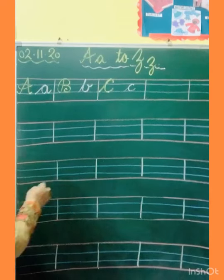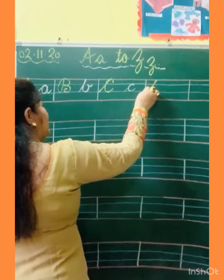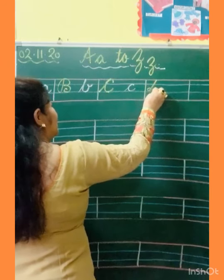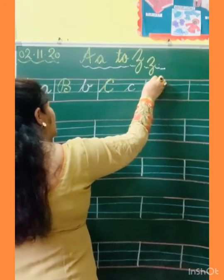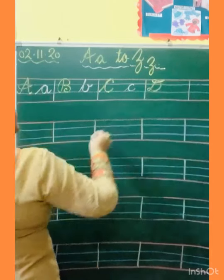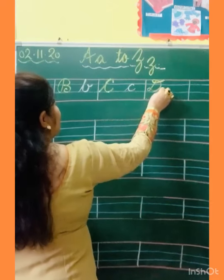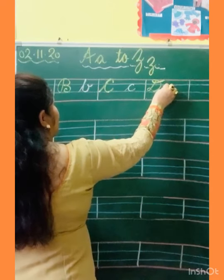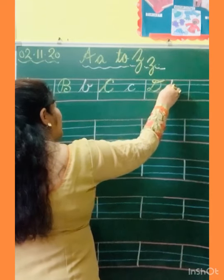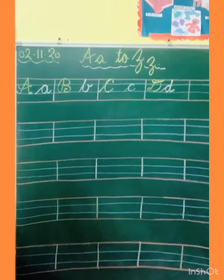Now D. How to do capital D? Slanting line, go back, turn, touch the third line, go up, go back and make an oval shape, and touch the top line. Small D: slanting line, make an A shape, go to standing line, again come down in this standing line, and kick. D.